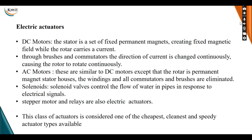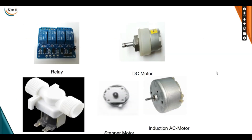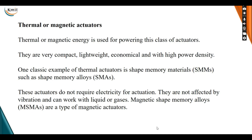Another type of electric actuator is the solenoid. Solenoid valves control the flow of water in pipes in response to electric signals. Stepper motors and relays are also examples of electric actuators. These are considered some of the cheapest, cleanest, and fastest actuators available. The next slide shows different types: relay actuators, DC actuators, solenoid-based flow valves, stepper motors, induction motors, and AC motors.